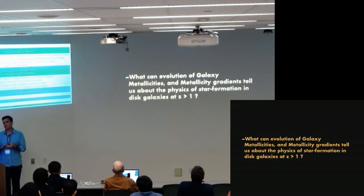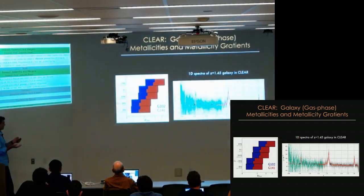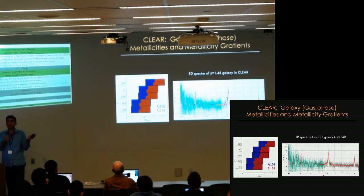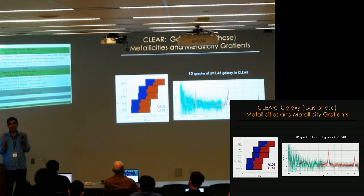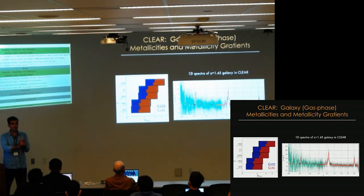Moving to the second half of the talk: what can we learn from galaxy metallicities and ionization that we can divine from their emission lines? The GRISM data give us things like, for a galaxy at redshift 1.45, strong Oxygen II, H-beta, Oxygen III, and H-alpha — all redshifted into these bands. The advantage with Hubble is we're above the Earth's atmosphere, so we're immune to variable sky backgrounds and have very accurate flux calibration. At most redshifts between 1 and 2, we cover multiple species sensitive to ionization and metallicity.